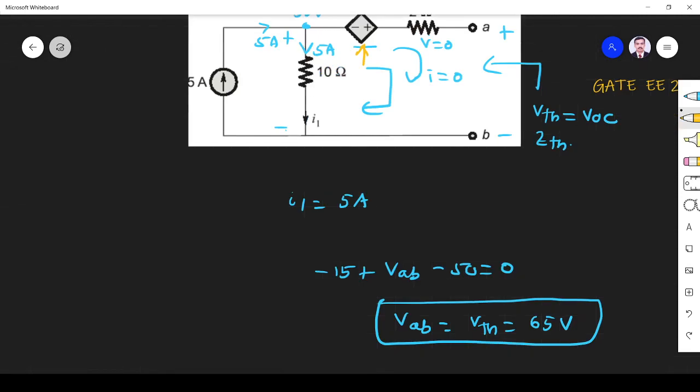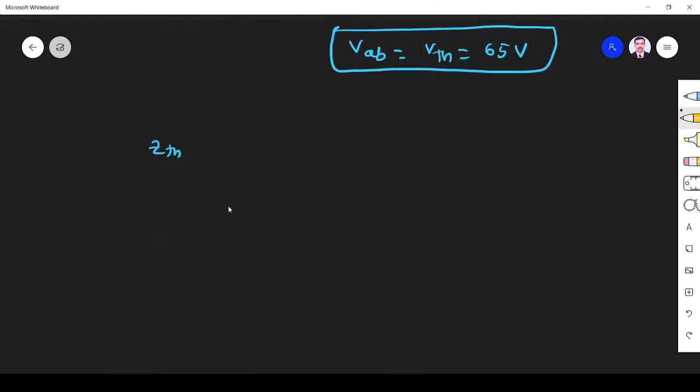So we have only this part. This is 10 ohm, here current is i1, here it will be like this minus plus 3i1, 2 ohm, so it will be like this. Across which terminal are we going to find our Zthevenin?